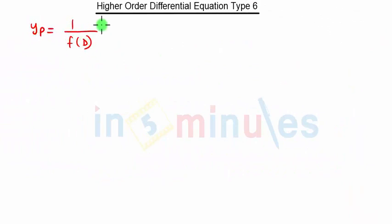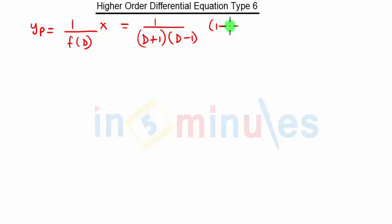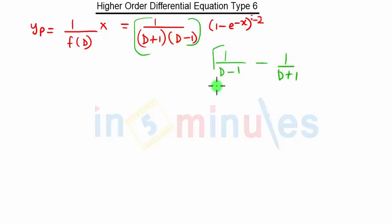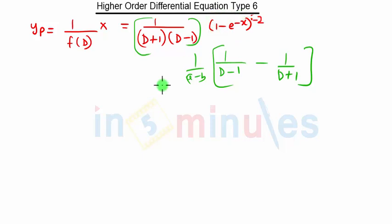Now we will calculate yp. The general formula of yp is 1 upon f(D) into X, where f(D) is (D plus 1) into (D minus 1) and X is (1 minus e raised to minus x). In a previous problem we used to split these two terms, but in this case we are not going to split because this is a very simple function of x.